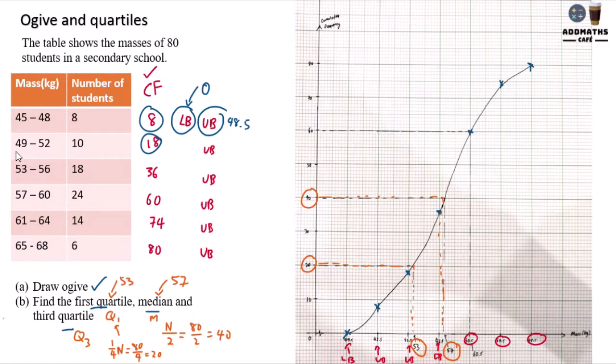Now third quartile will be 3 over 4 times N, which is 3 over 4 times 80, will then give you 60. So look at 60, draw a straight line, bring it down, and you will have 60.5. So your third quartile over here, third quartile over here is 60.5.